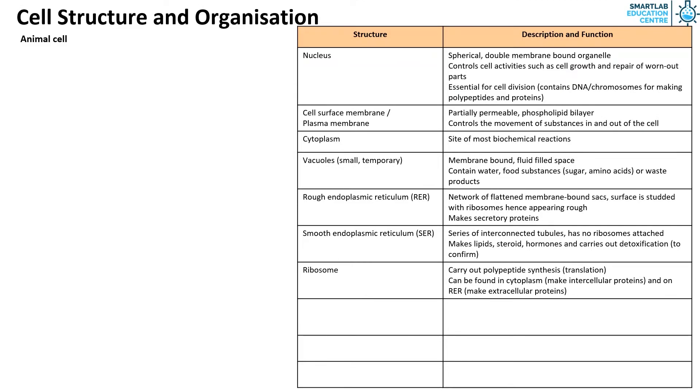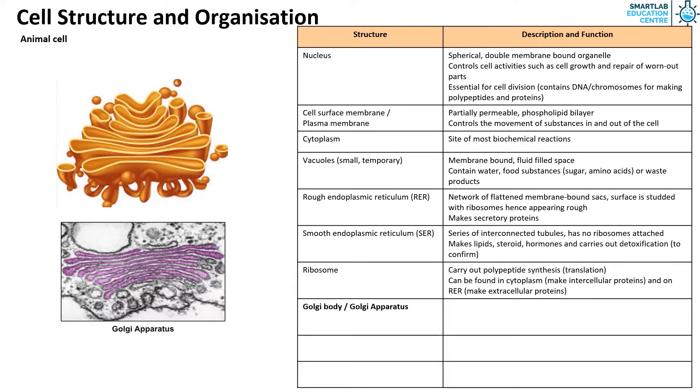The Golgi body, or Golgi apparatus, are stacks of flattened membrane-bound sacs, not physically connected. They chemically modify proteins made by ribosomes on the ER, pack and sort them into secretory vesicles.